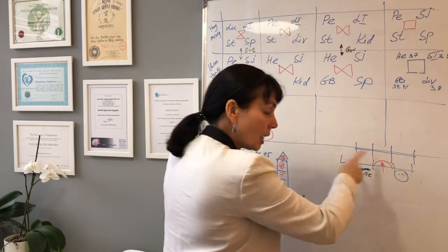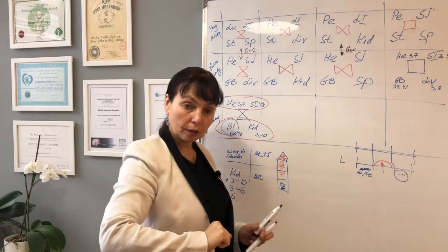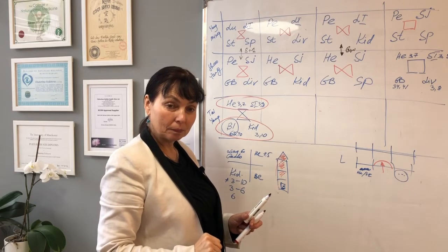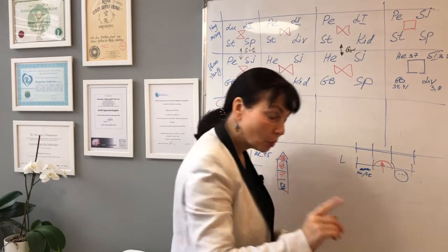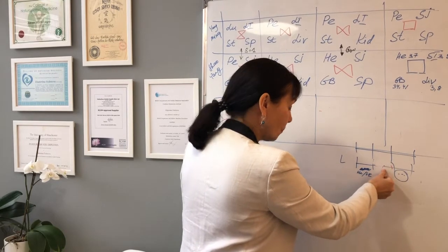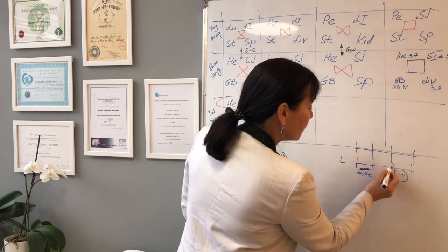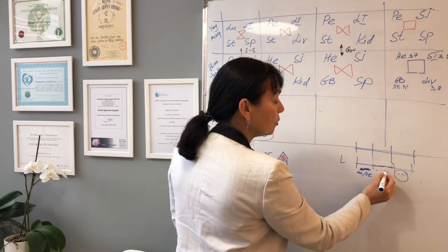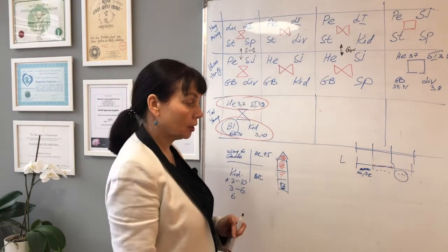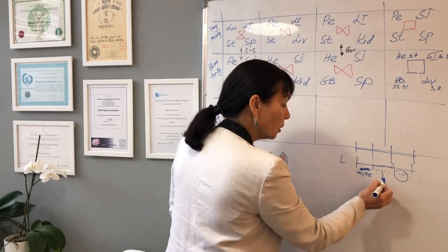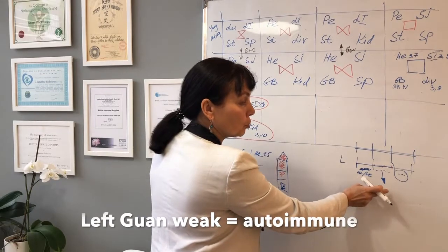And the next stage is autoimmune disorder. How do you distinguish autoimmune disorder? The liver, on the left one. If you start taking pulse and you can hardly feel it, just hardly, it's very weak, I put the arrow down. This is autoimmune disorder.